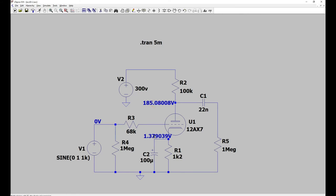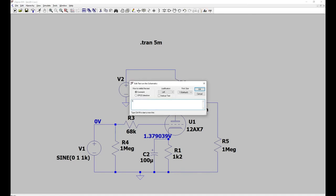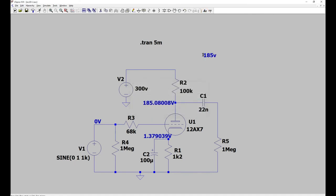This is the DC value in the operating point we have 1.4 volts of bias point in the cathode and 185 volts of plate voltage.